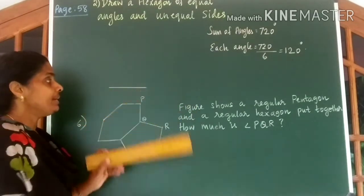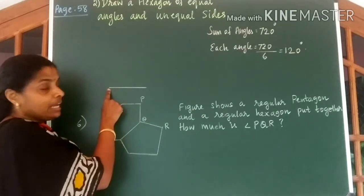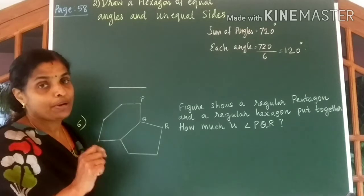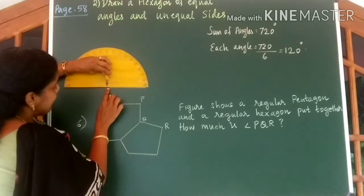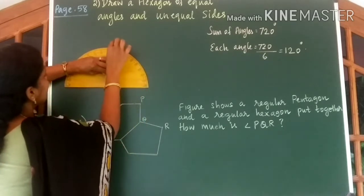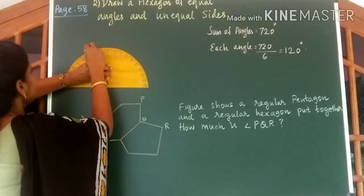Now measure 120 degrees at both these ends using your protractor. Keep your protractor at this end. Measure 120 degrees. 120 degrees is here.